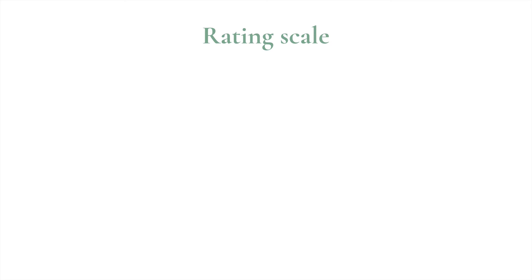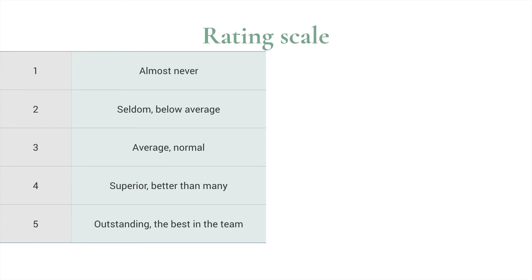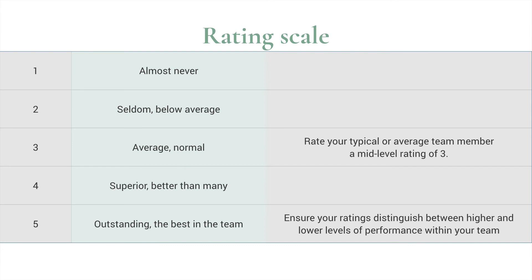In each of these attributes, you'll be rating your team member against a rating scale. The rating scale is a one-to-five point scale, ranging from almost never at one extreme, through average, normal, or outstanding — the best in your team — at the other. Typically, you'll be giving most members of your team a mid-level rating of three unless you're a super high performing team. Remember to ensure your ratings distinguish between higher and lower levels of performance within your team.